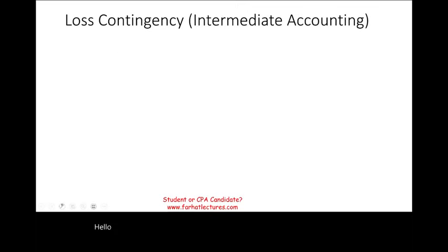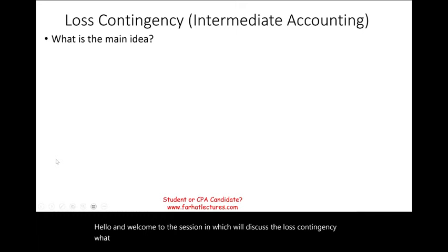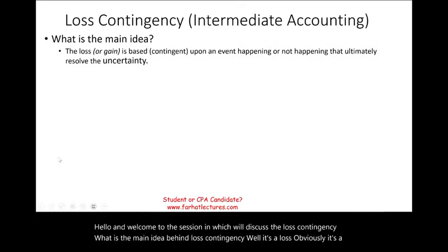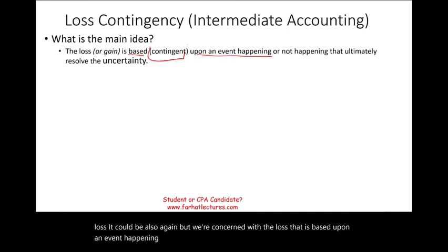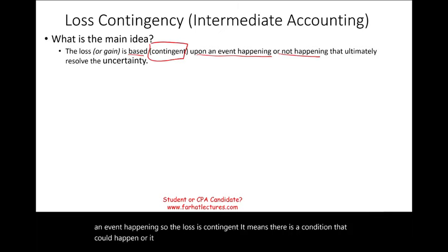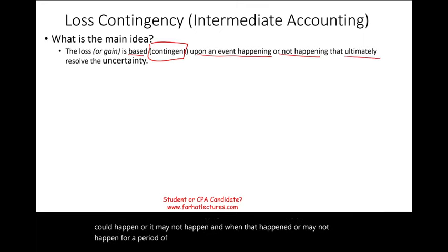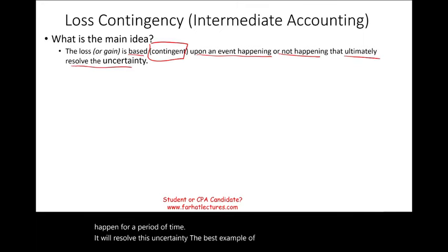Welcome to this session on loss contingency. The main idea is a loss — or potentially a gain — that is based upon an event happening. The loss is contingent on a condition that could happen or may not happen, and over time that uncertainty will resolve itself. The best example of a loss or gain contingency is a lawsuit or litigation.